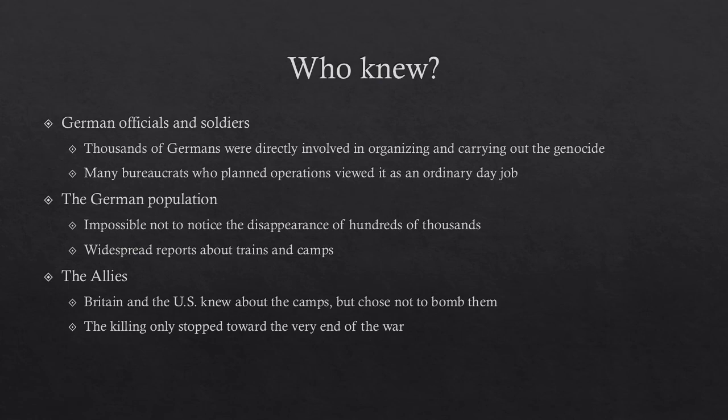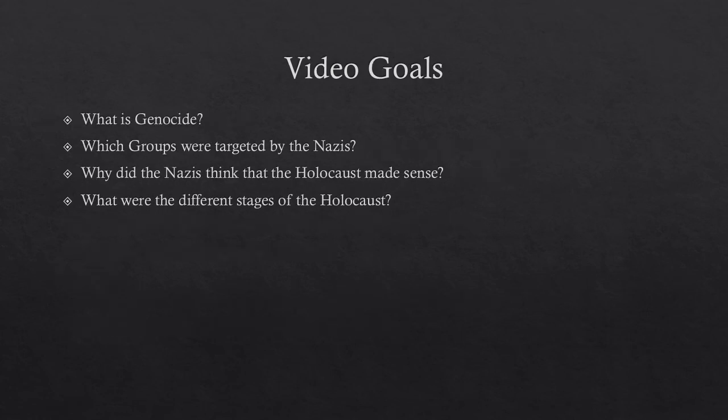The Allies also knew. Britain and the United States learned about the camps fairly early on but chose not to bomb them — they could have bombed the gas chambers at Auschwitz but decided instead to bomb factories and airports to end the war more quickly. The killing at the concentration camps only stopped at the very end of the war when Allied troops actually occupied Germany. Please take a moment to review the goals and make sure you can answer those questions.